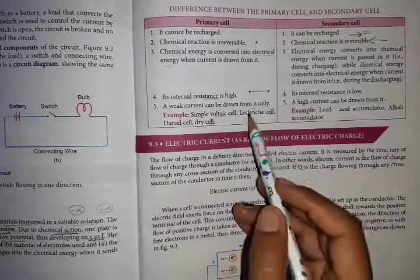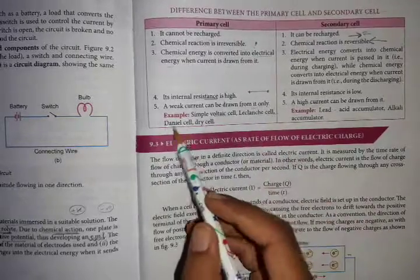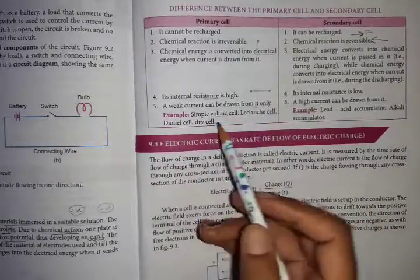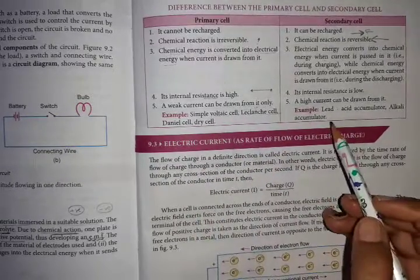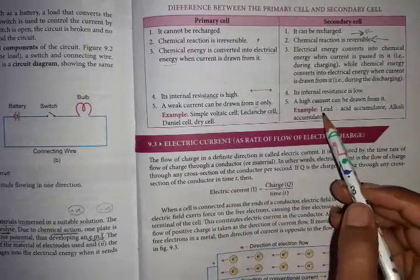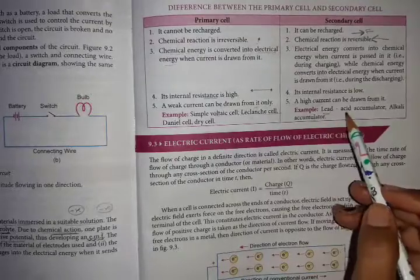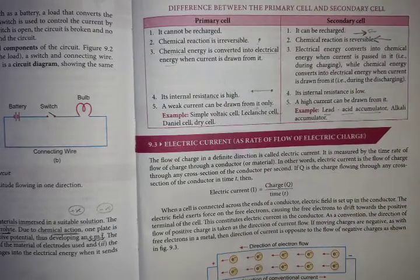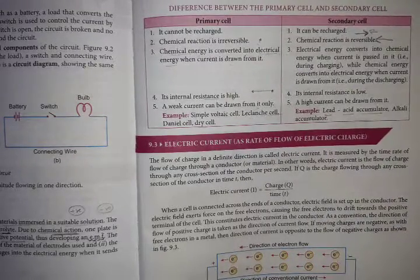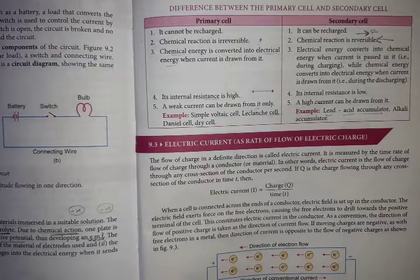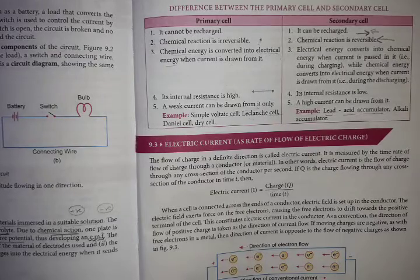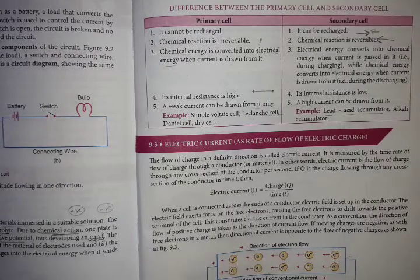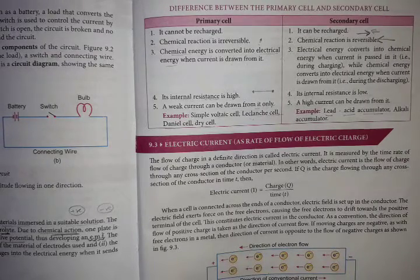Examples of primary cells: Voltaic cell, Daniell cell. Examples of secondary cells: lead-acid and alkaline accumulator. Please read topics 9.1 and 9.2, and at the day of our Zoom class we will discuss them.